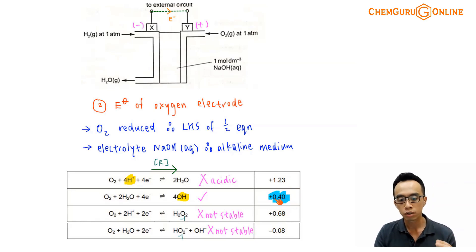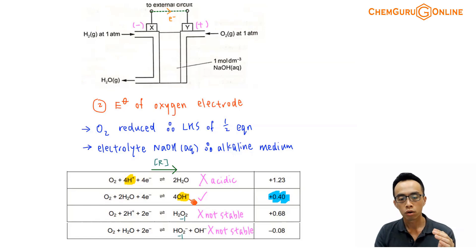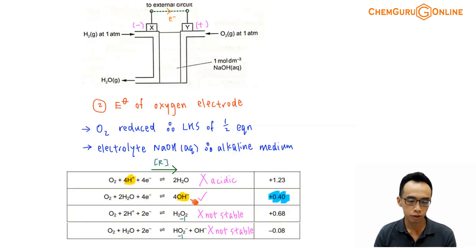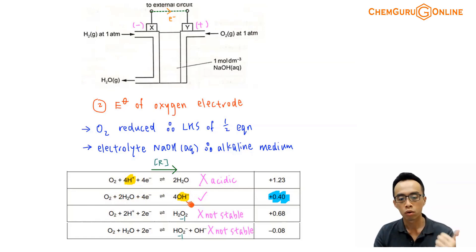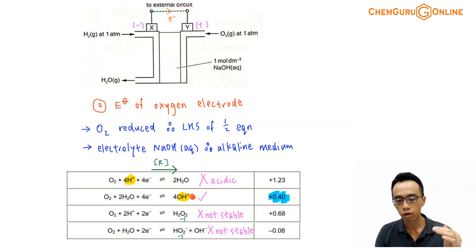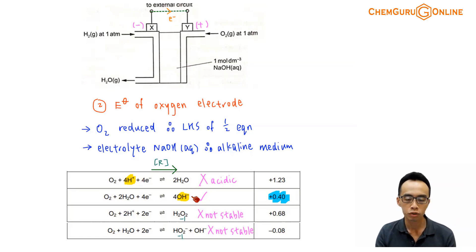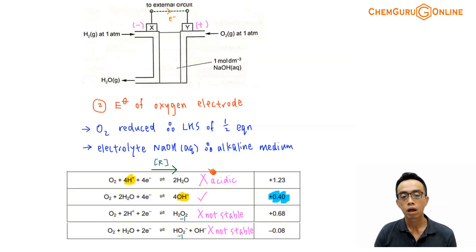The second half equation has an E-value of +0.40V, where O2 is reduced to OH⁻. Since OH⁻ is present, this is more suitable for this question because the electrolyte is alkaline. So we will use this half equation for the reduction of O2 to OH⁻ in alkaline medium. The oxidation state for oxygen in both water and OH⁻ is −2, which is the common and stable oxidation state for oxygen.